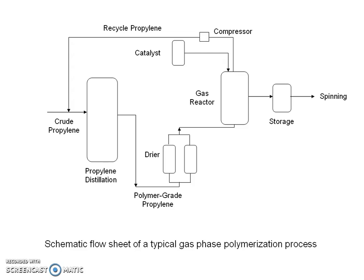The dried polypropylene flake is then supplied directly to polymer processors or compounded with suitable stabilizers and pelletized. The second method of production of polypropylene polymer is gas phase polymerization.